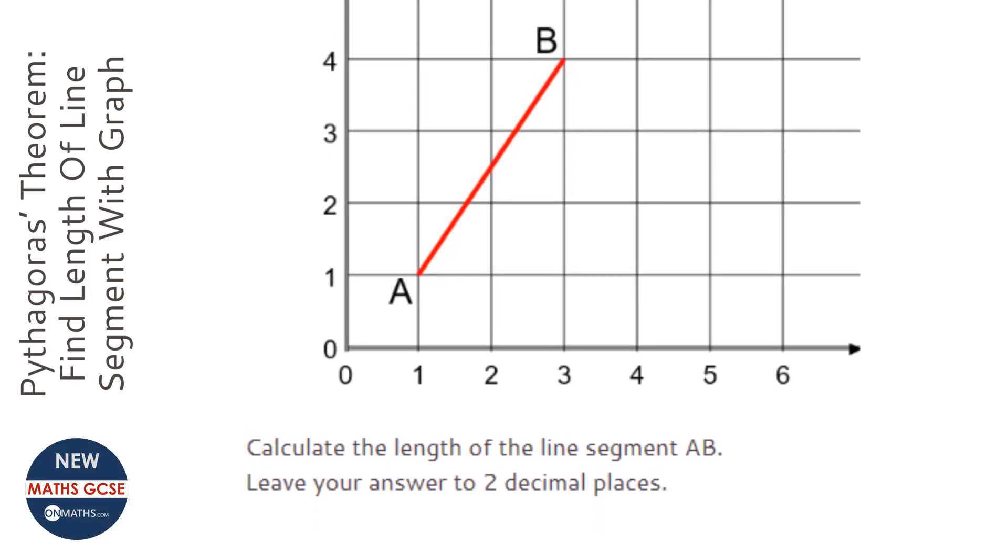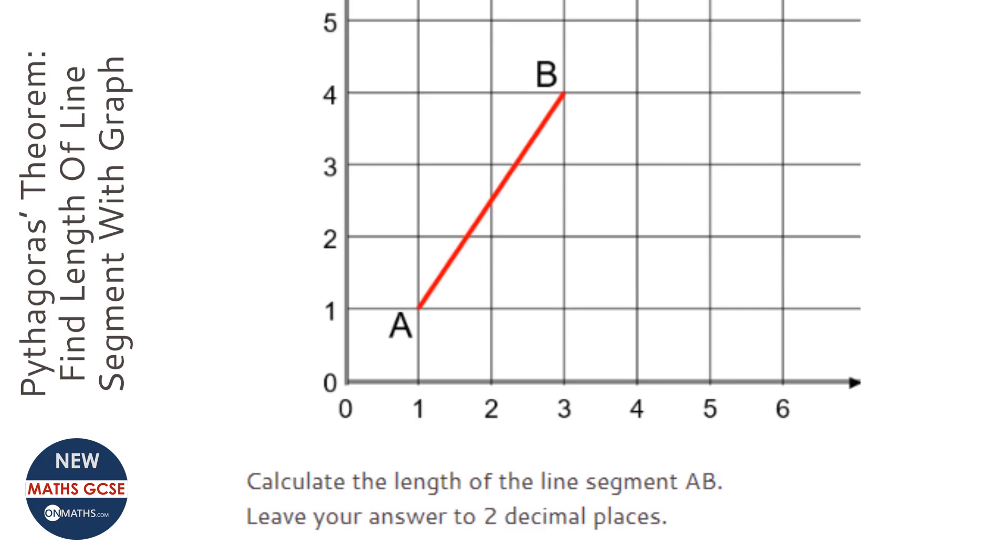OK, so we're asked to find the length of the line AB. And the way of doing this is you work out how far across you go and how far up you go. And by doing that you create a right angle triangle.